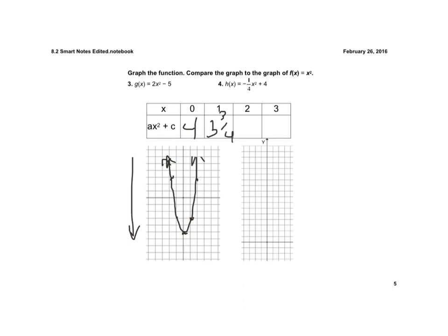2 squared is 4, and negative 1/4 times 4 is negative 1, and negative 1 plus 4 would be 3.